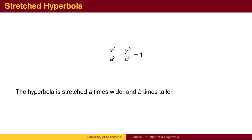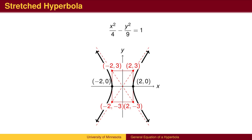We can stretch the hyperbola the same way we stretched the ellipse. Dividing x squared by a squared stretches the graph left and right by a factor of a. Similarly, dividing y squared by b squared stretches the graph up and down by a factor of b. For example, if the x squared term is positive and the y squared term is negative, this is a hyperbola with vertices on the x-axis. The horizontal stretch factor is 2, so the vertices have x values of plus and minus 2. The vertical stretch factor is 3, so the asymptotes go through points 2 units left and right and 3 units up and down. The hyperbola is then graphed starting at the vertex and heading left and right toward the asymptotes.